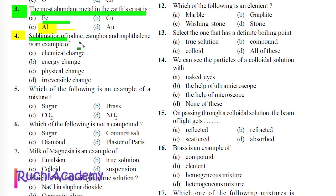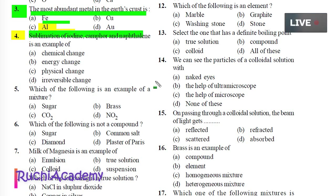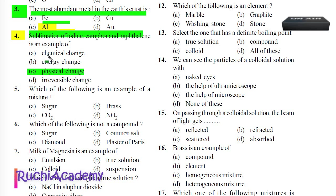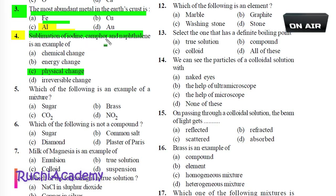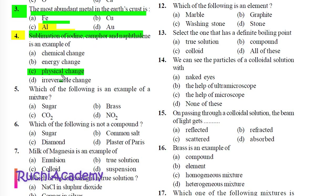Question 4: Sublimation of iodine, camphor and naphthalene is an example of: A) Chemical change, B) Energy change, C) Physical change, D) Irreversible change. Answer is C) Physical change. Sublimation is a process in which a solid converts into gas directly without converting into liquid. All three — iodine, camphor, and naphthalene — are volatile substances.